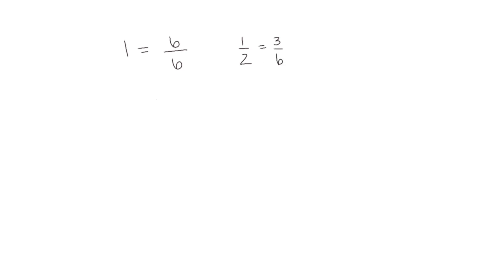Let's say if I want to compare three sixths to two sixths. That's pretty easy. If they're both sixths, if I have two of them, I have less than if I have three of them. So two sixths is less than three sixths. Then if we want to compare two sixths to one half, because we know one half and three sixths are equivalent, then if two sixths is less than three sixths, two sixths is also less than one half.